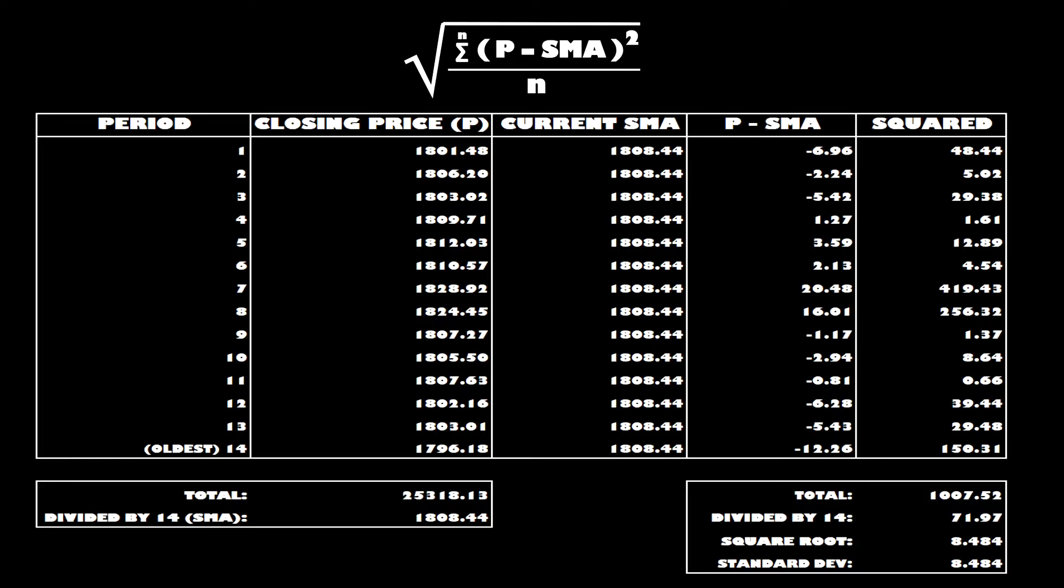Once we've got that total we divide it by the number of periods, which in our example is 14. That gives us our variance of 71.97, meaning we can finally calculate the square root of the variance to reveal our standard deviation oscillator reading of 8.484 for the current period.